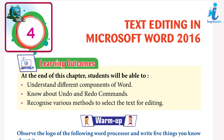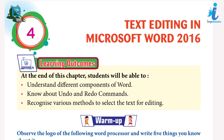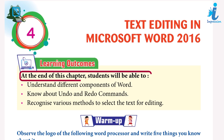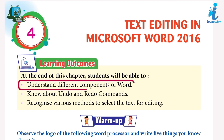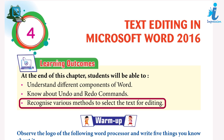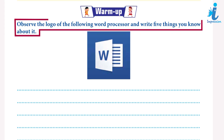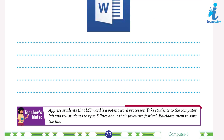Chapter 4: Text Editing in Microsoft Word 2016. Learning outcomes: at the end of this chapter, students will be able to understand different components of Word, know about undo and redo commands, and recognize various methods to select text for editing. Warm-up: observe the logo of the following word processor and write five things you know about it.